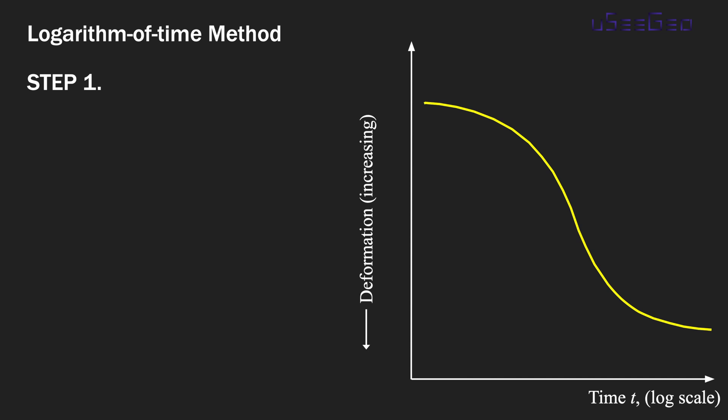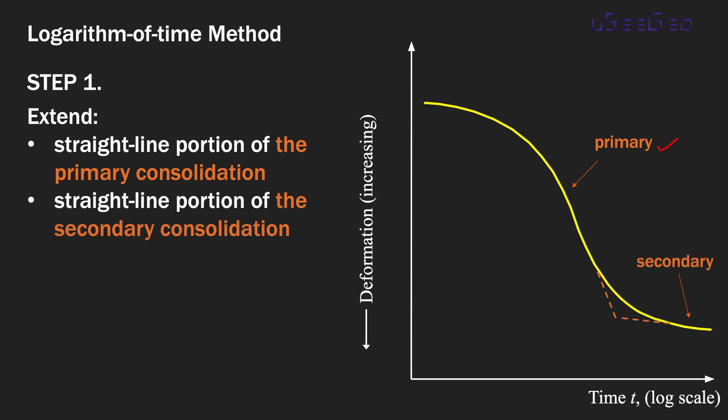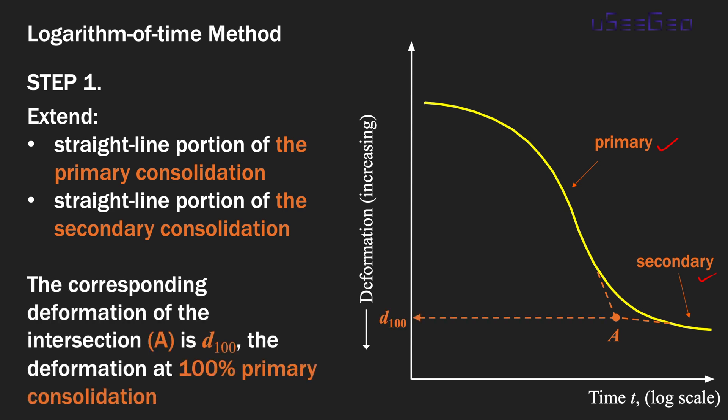In the Logarithm of Time Method, the first step is to extend the straight line portion of the primary consolidation — highlighted on this slide — and also extend the straight line portion of the secondary consolidation. These two straight lines will intersect, and we call that intersection point A. The deformation corresponding to point A is defined as d100, which is the deformation at 100 percent primary consolidation.